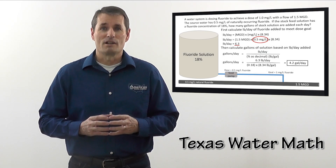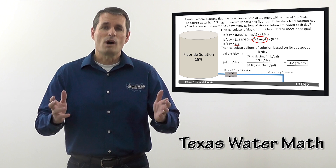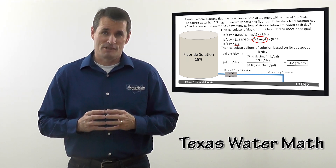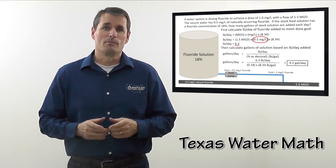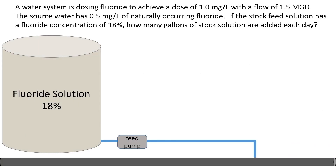I'm Joe Kirshner with American Water College. Watch as I use my five-step approach to solve this problem. Here we have a fluoride dosing problem, but this could be any chemical — it just happens to be fluoride. A water system is dosing fluoride to achieve a dose of one milligram per liter with a flow of 1.5 MGD.